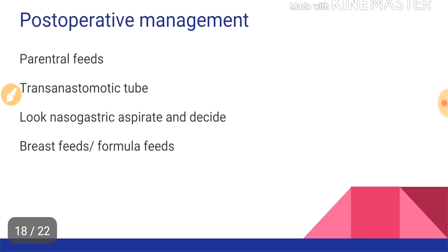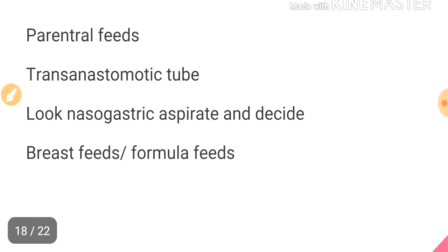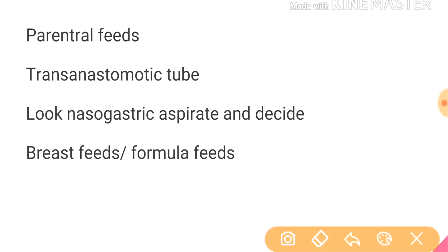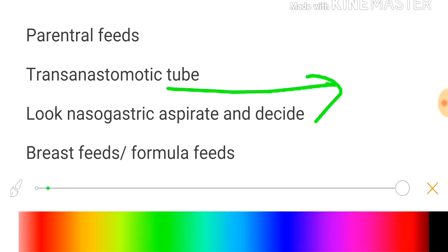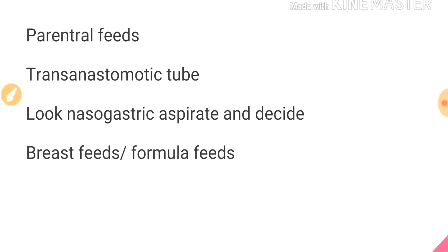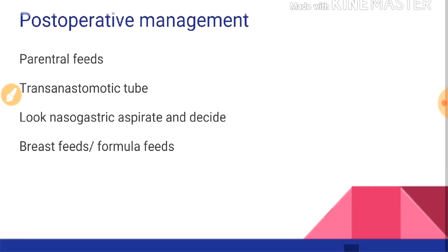Postoperative management begins with parenteral feeds; enteral feeding is generally delayed. A trans-anastomotic tube is used by some surgeons for early enteral feeding but is controversial due to risks of misplacement and intestinal injury. When to start enteral feeds depends on the nasogastric aspirate — when the color changes from green to light yellow and the quantity decreases, we can slowly start enteral feeding by breast feeds or formula feeds.